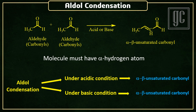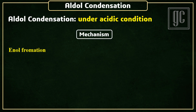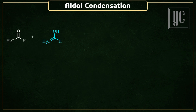In both catalyzed conditions, the reaction gives alpha-beta unsaturated carbonyl compounds. First is aldol condensation in acidic conditions. The mechanism: the first step is formation of enolate. Here, in the presence of acid, the carbonyl group of the molecule gets protonated. Now one alpha hydrogen is removed from the molecule and its bonding electrons are shifted to the carbonyl carbon, and as a result a carbon-carbon double bond is formed and the final enolate product is formed.